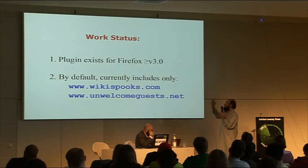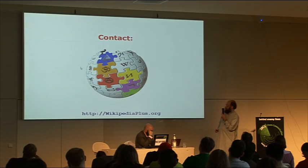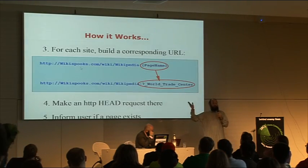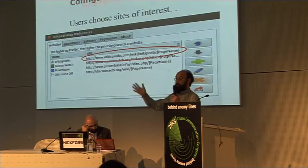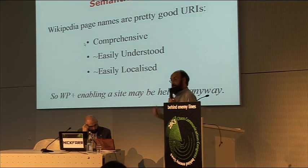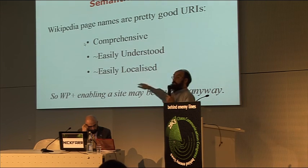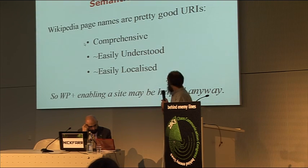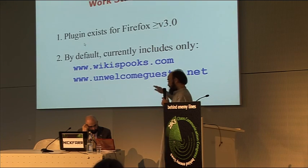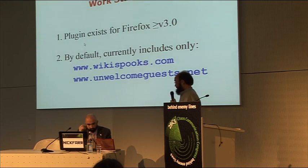Where is the software at the moment? There is a plugin that works for Firefox 3 or more. What we're looking for is anybody who wants to develop it for IE or Chrome, or improve the plugin. Even better, if you've got a website — that's actually the biggest gap, because there's a network problem here. People say, 'Oh, but that only works for a couple of websites.' Well, that's up to you. If you've got a website and you'd like some more traffic, then you just match your web pages to the Wikipedia URIs.